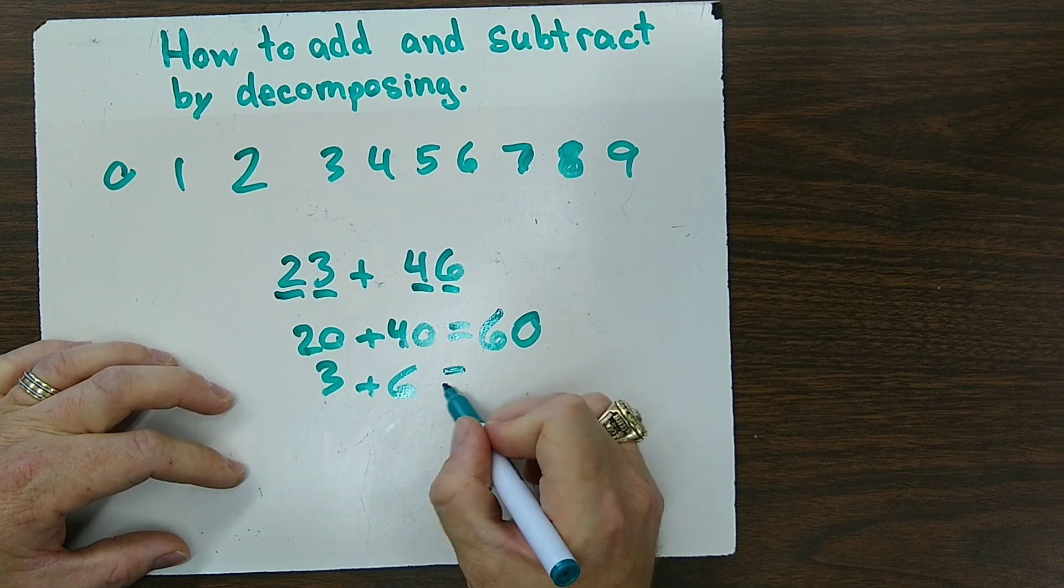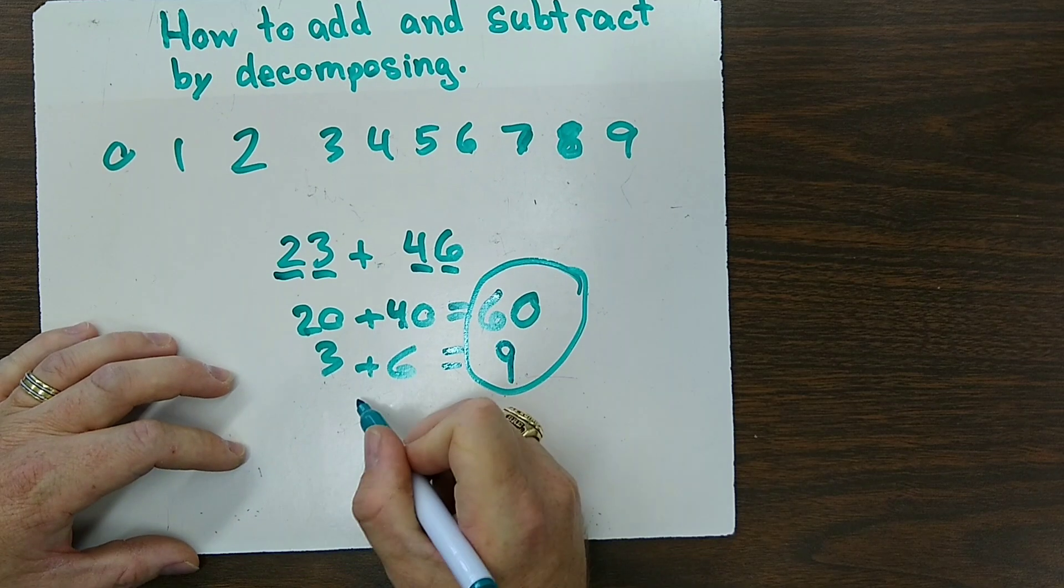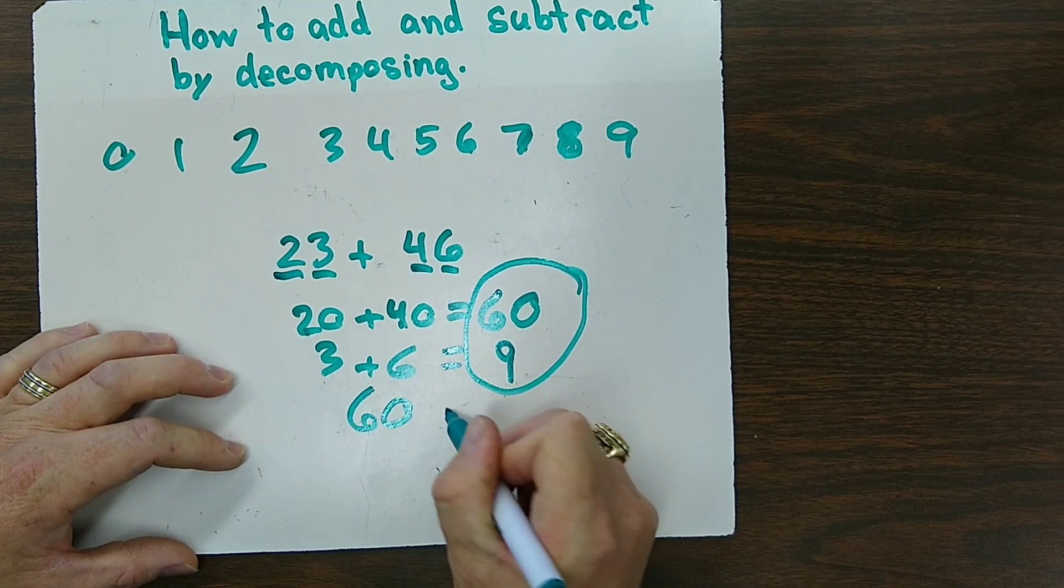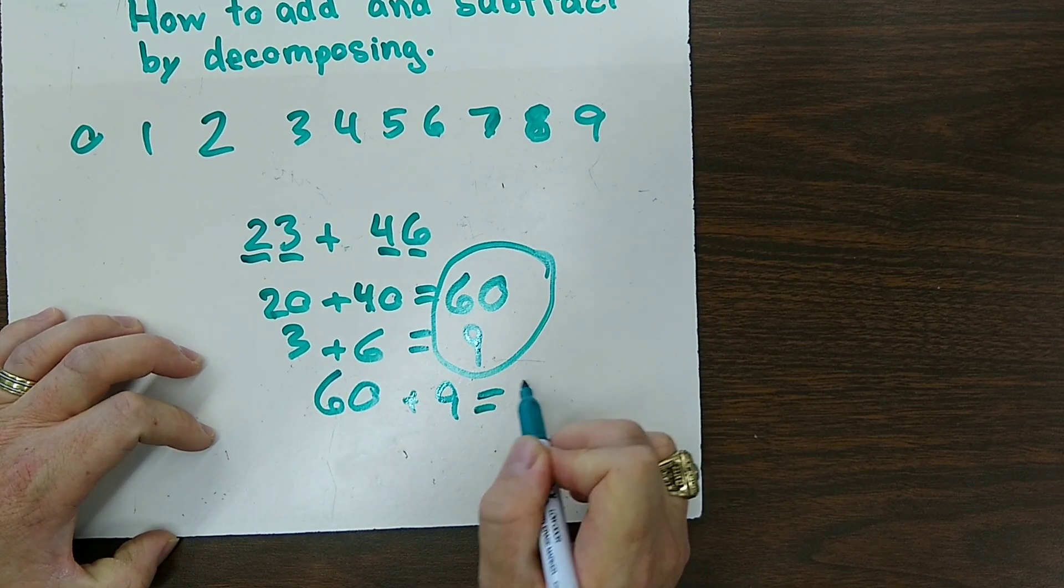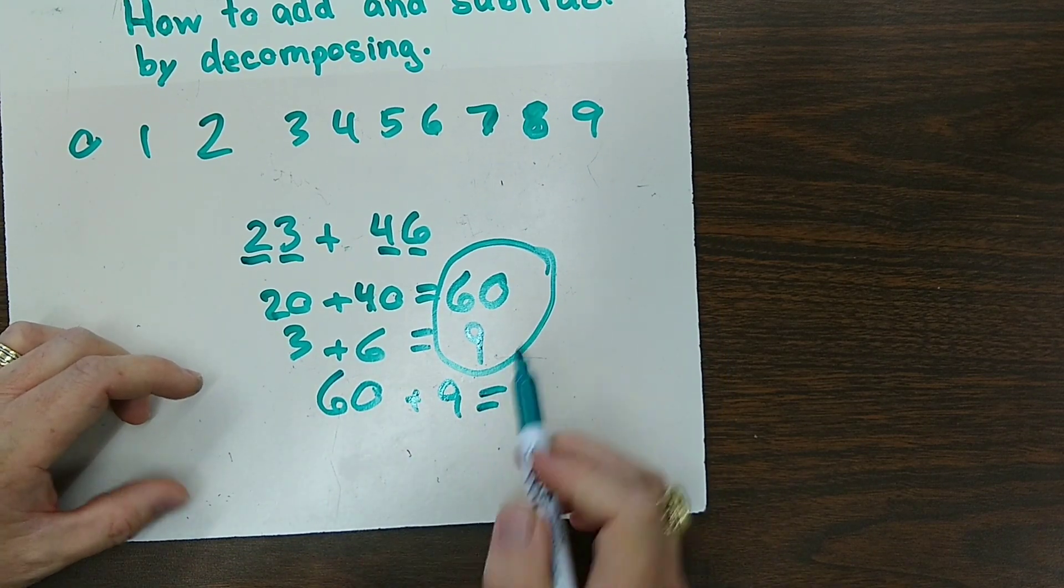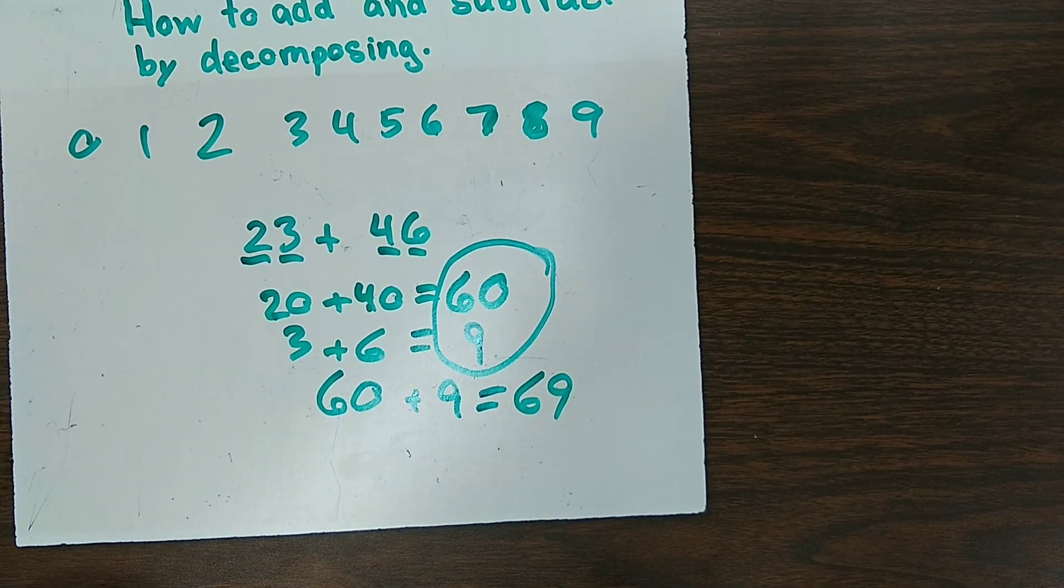3 plus 6 gives you 9. And at this point, all you have to do is put them back together again. Or you can write it out: 60 plus 9. That might be useful to do. And it gives you 69. And when you say it, you can hear 69. So that's how we add without regrouping.